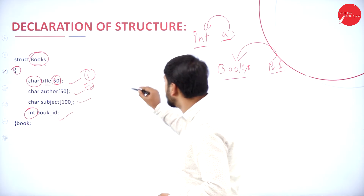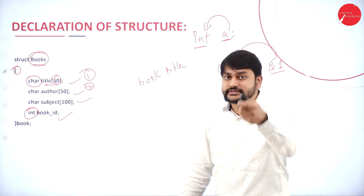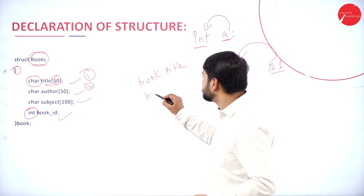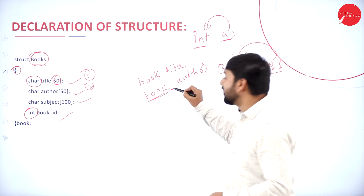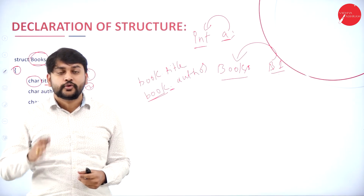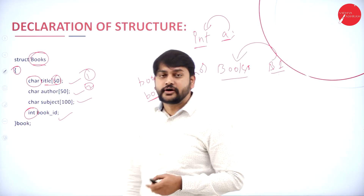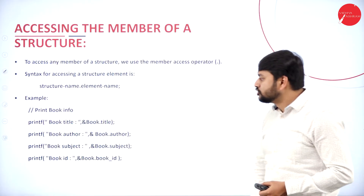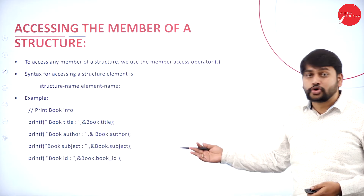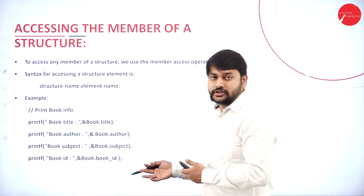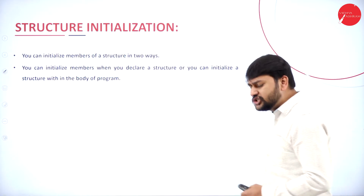The variable name is 'book', so to access title I write 'book.title'. To access the author, I write 'book.author'. In the same way, we have 'book.subject' and 'book.book_id'. You use the variable name combined with the dot operator to access any particular member of the structure.